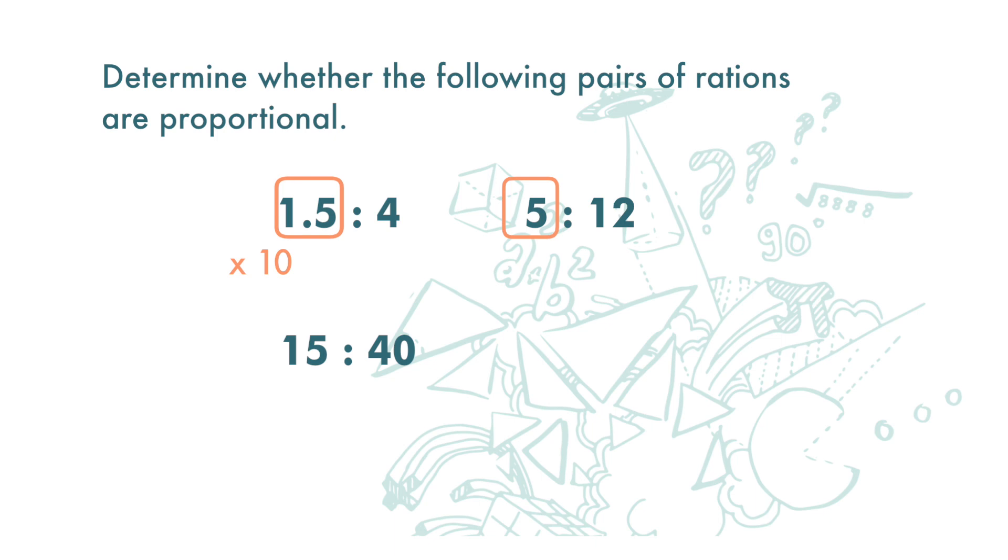If we multiply the second ratio by 3, we get 15 to 36. These two ratios are not equivalent, so they are not proportional.